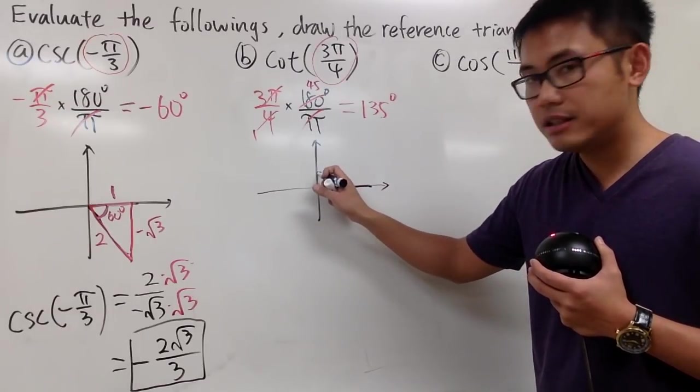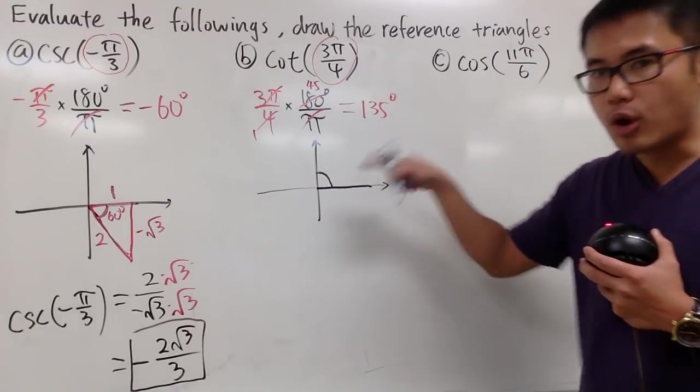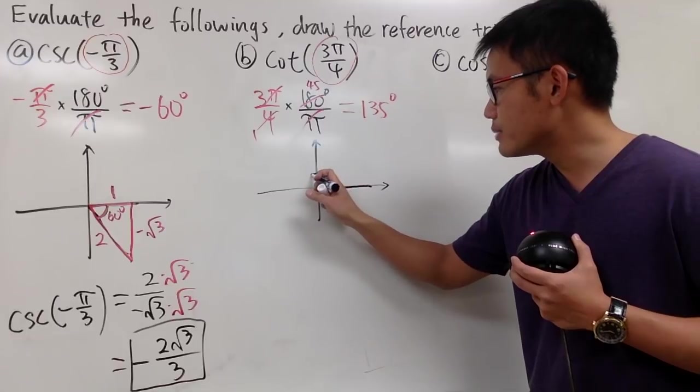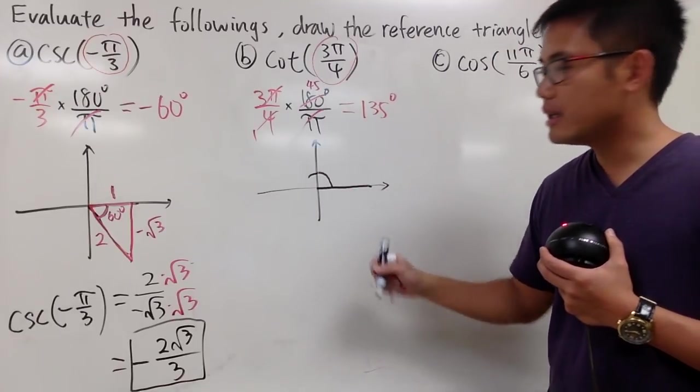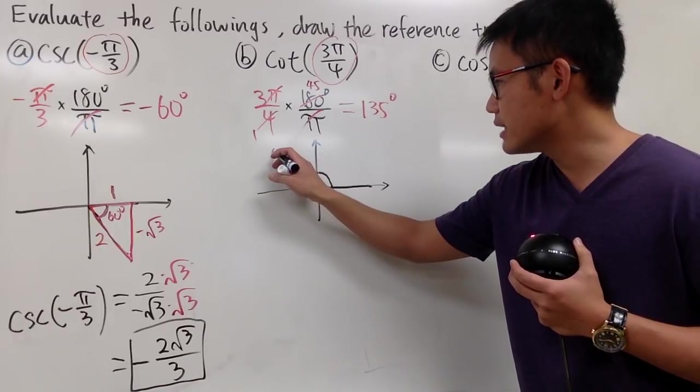From here to here is 90 already. To get to 135, we have to go 45 degrees more. So it's going to be like that. Remember, this much is 45 degrees, and let me just connect the dots.